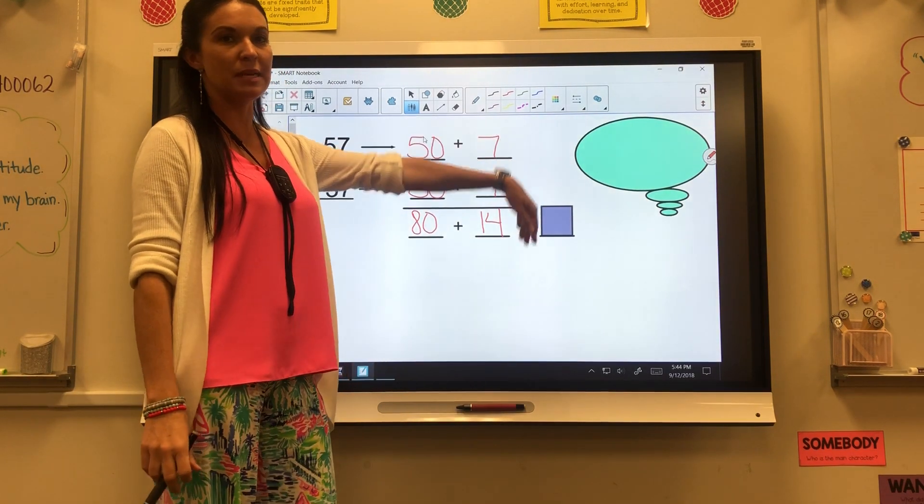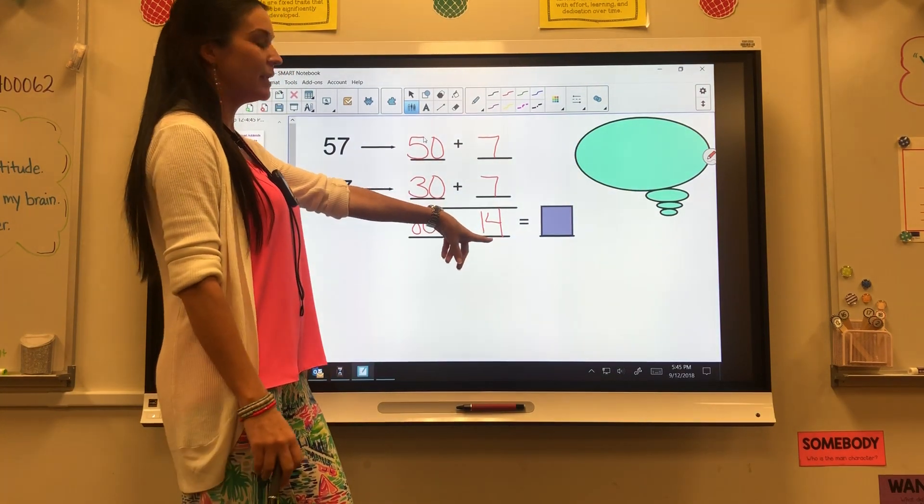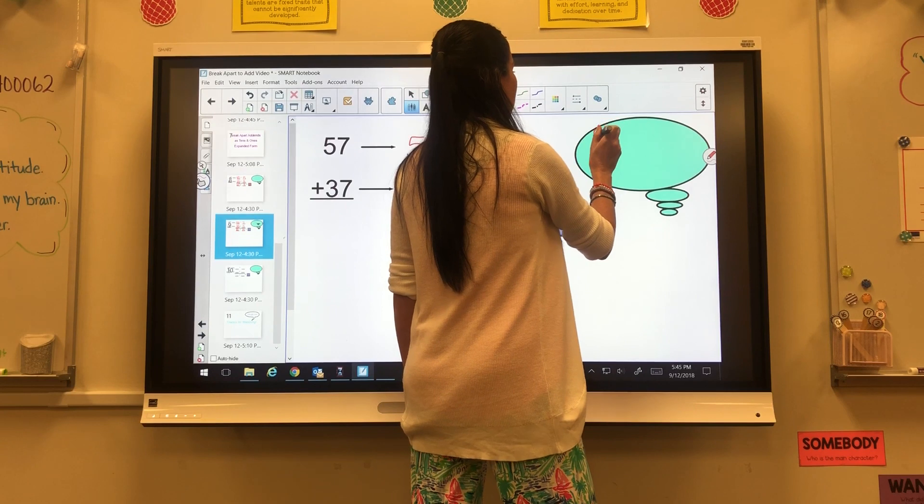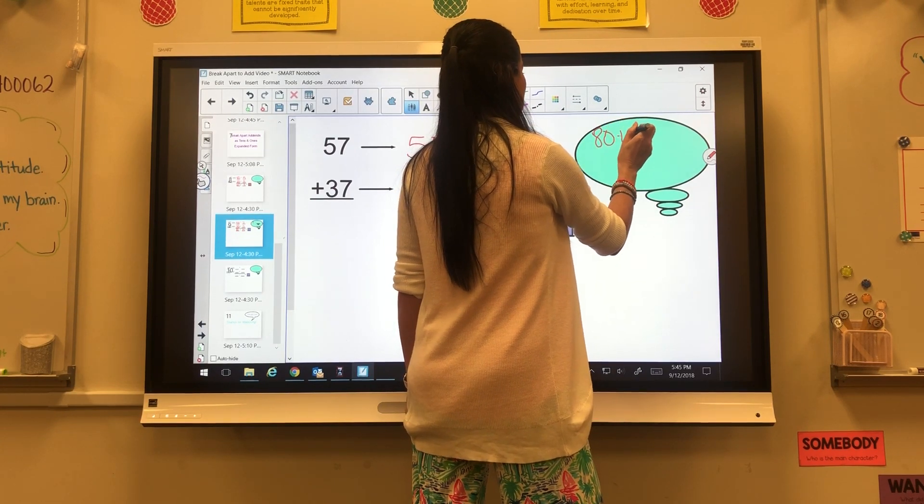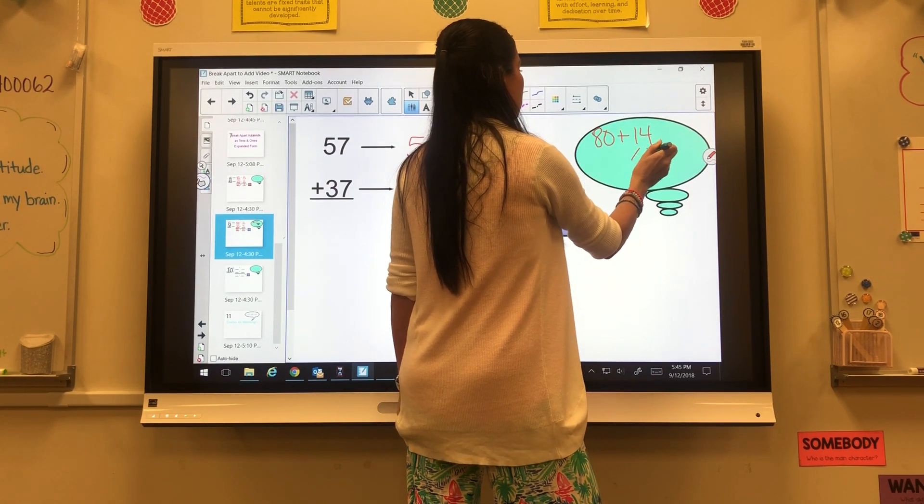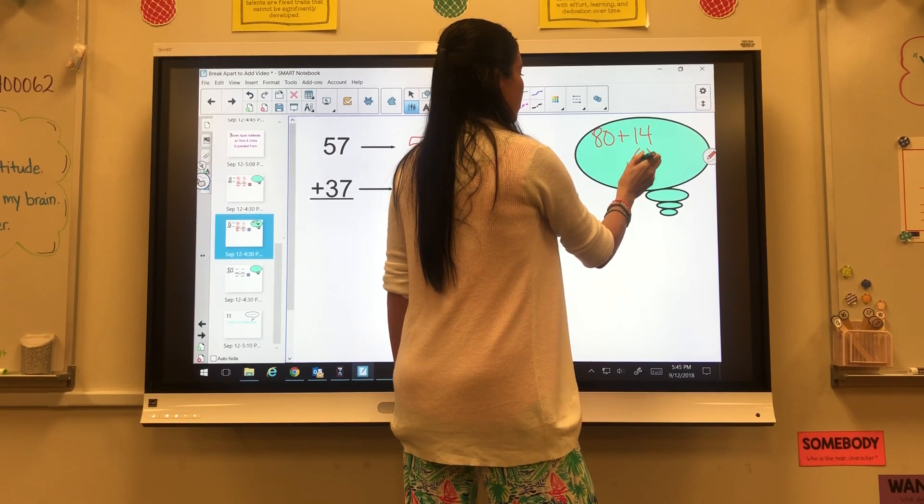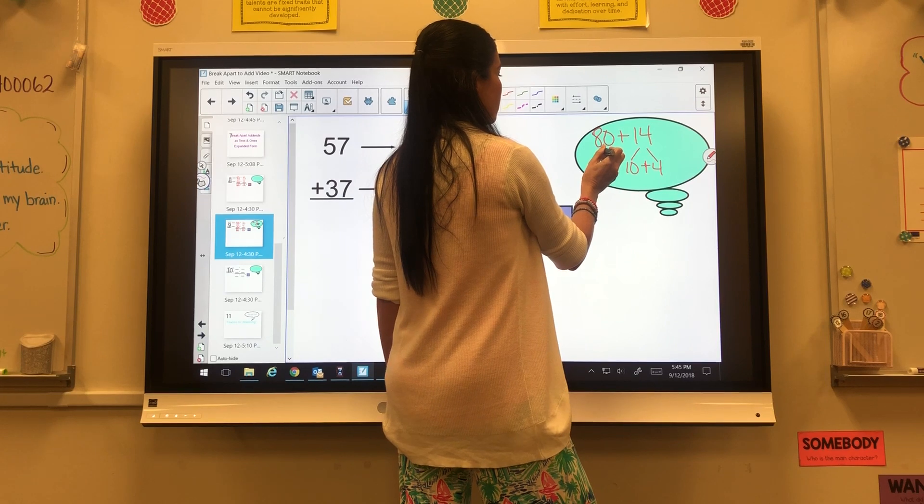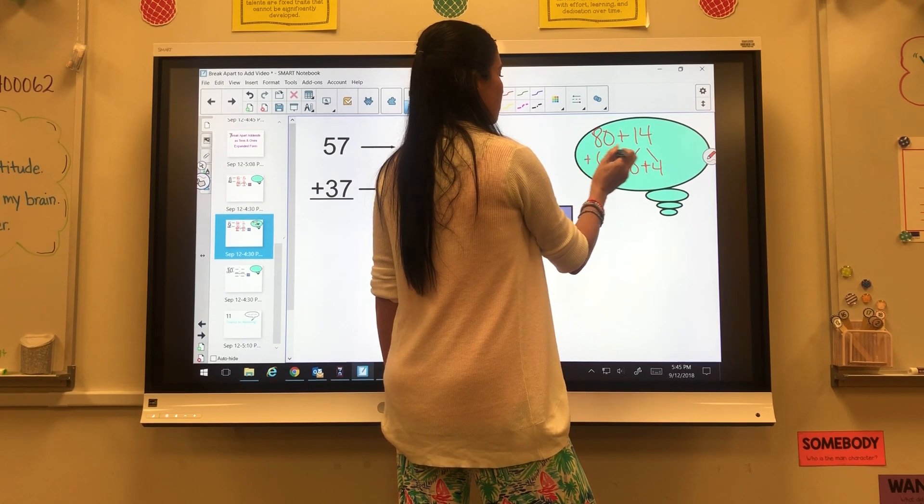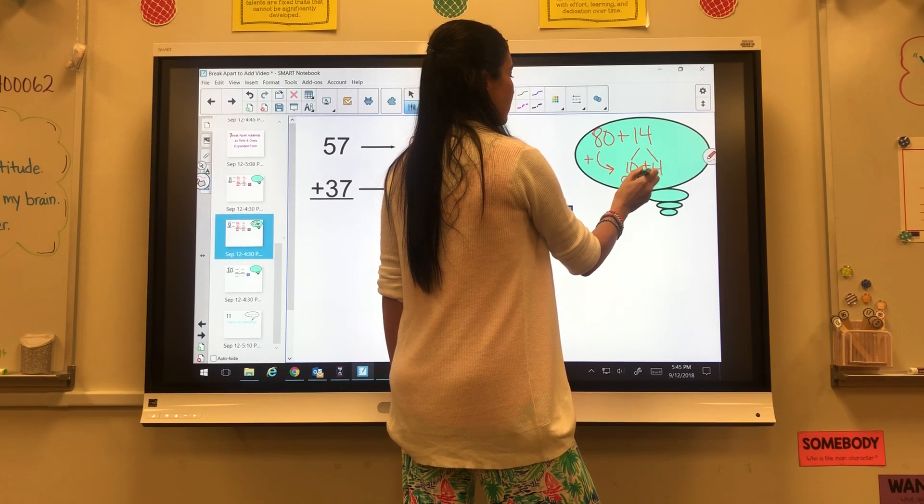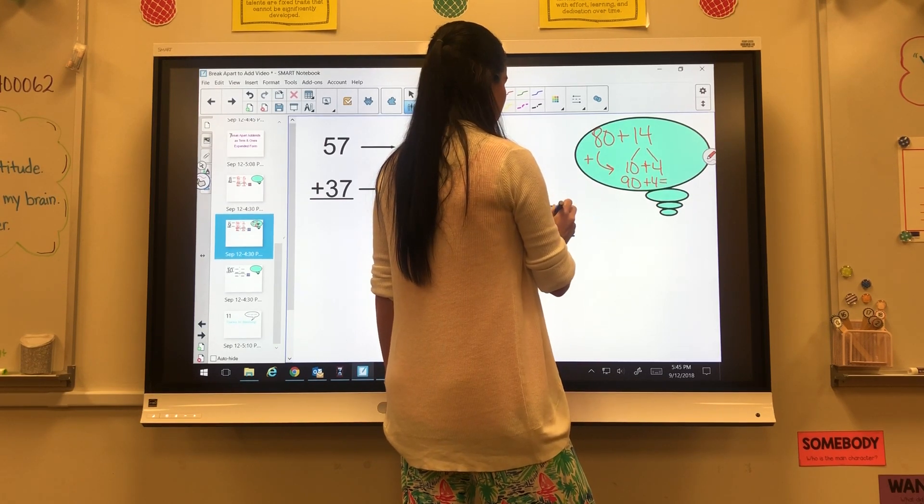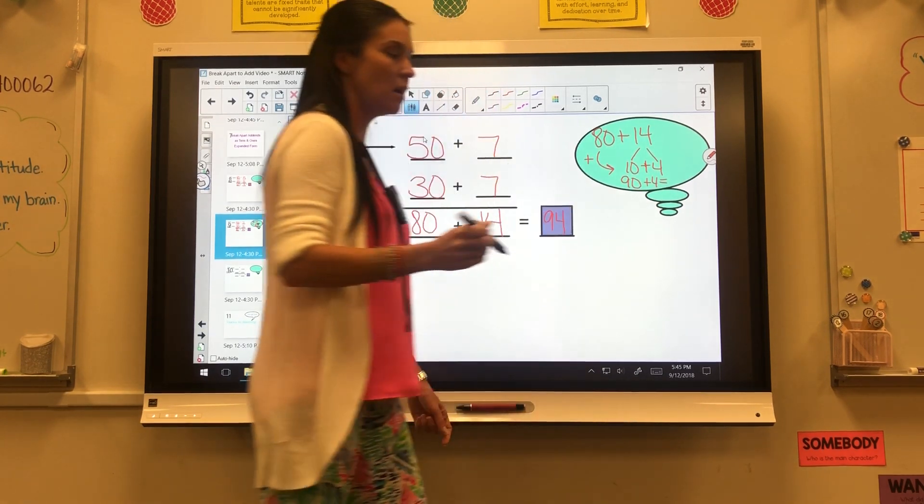Now here's where the bubble comes in. I have a 10 in here. 14 has a 10. So I'm going to come over here and get that out. 80 plus 14. I know in 14, I have 10 plus 4. So now I need to do 80 plus 10 is 90 plus 4 for an answer of 94.